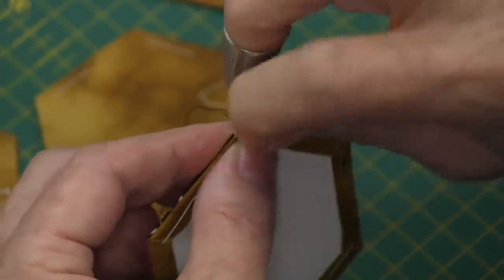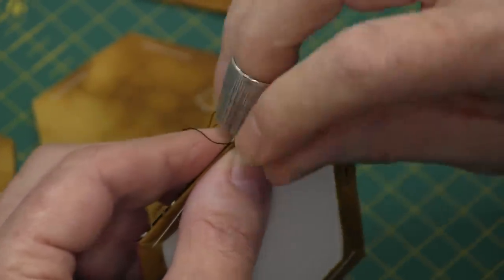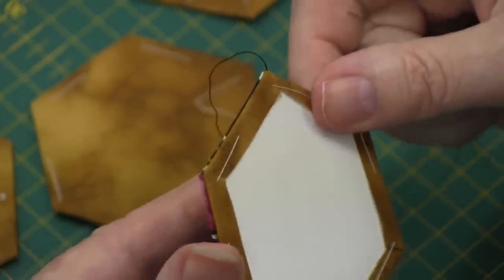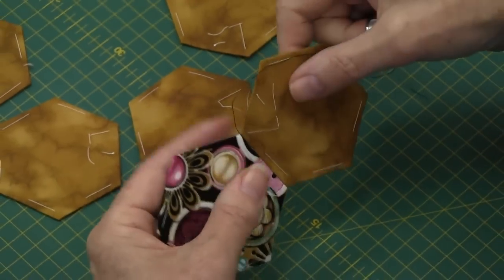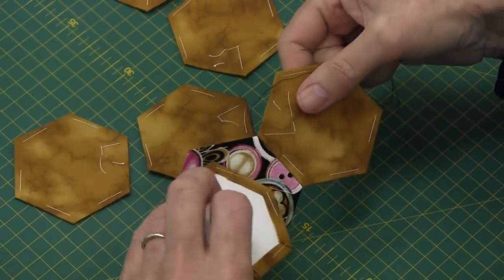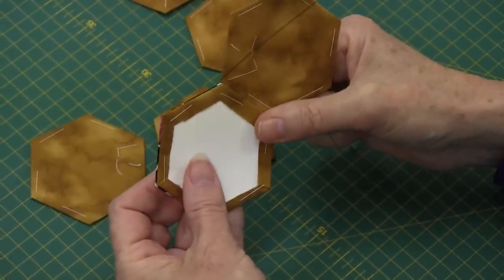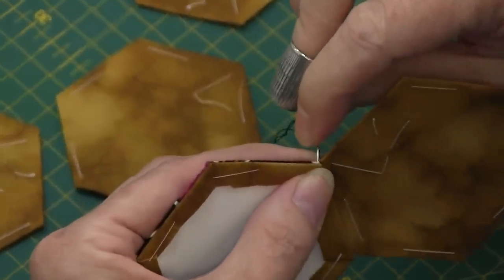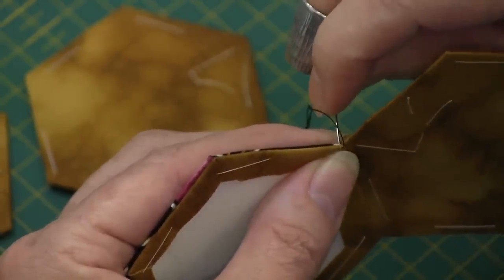When you get to the very end, I like to do two stitches right over the very corner. We don't need to cut our thread to add the next shape because we're going to continue around this hexagon shape. So pick up your next piece, position it over the center piece. Take two stitches right in the very corner.